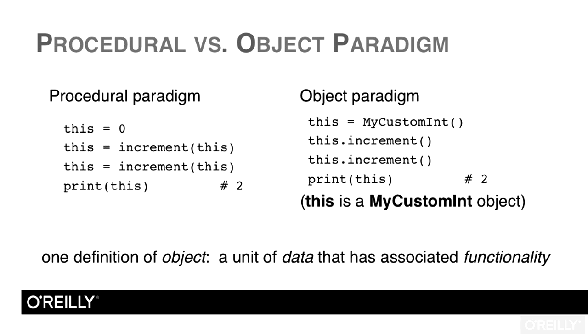In the procedural paradigm, we might design a function that works with an integer, and it would be doing the same work as the object. The difference is, in the object paradigm, we actually have a custom type of object that has its own special method for doing this incrementing. The functionality and the data are connected, and that's really the best way to begin thinking about objects. Data plus functionality.